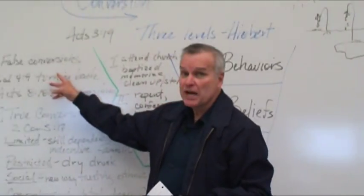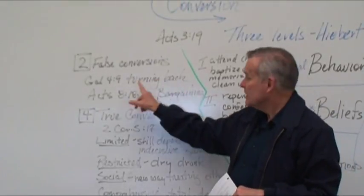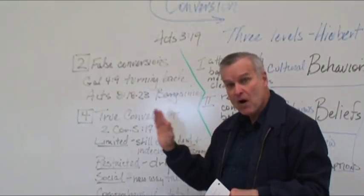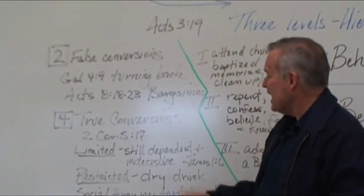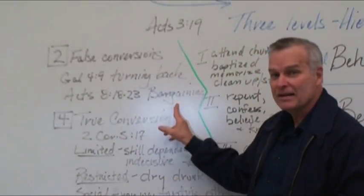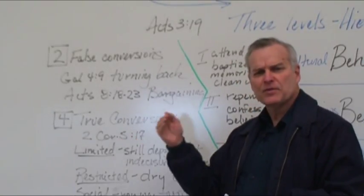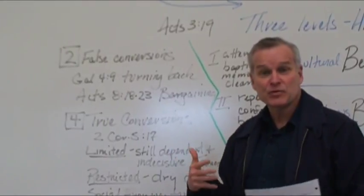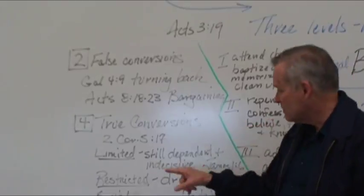Actually, the Bible says there are two kinds of false conversion. Turning back from God, Galatians 4:9, is a false conversion. It's a repentance in the wrong direction. And bargaining with God is a false conversion, trying to make a deal with God for your salvation. Salvation is a free gift. It comes to us by surrender. It comes by authentic conversion.